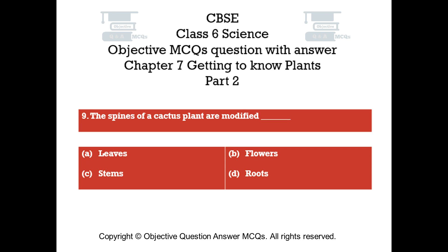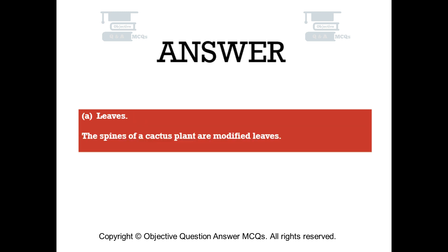Question number nine. The spines of a cactus plant are modified: Option A leaves. Option B flowers. Option C stems. Option D roots. The right answer is option A — leaves. The spines of a cactus plant are modified leaves.